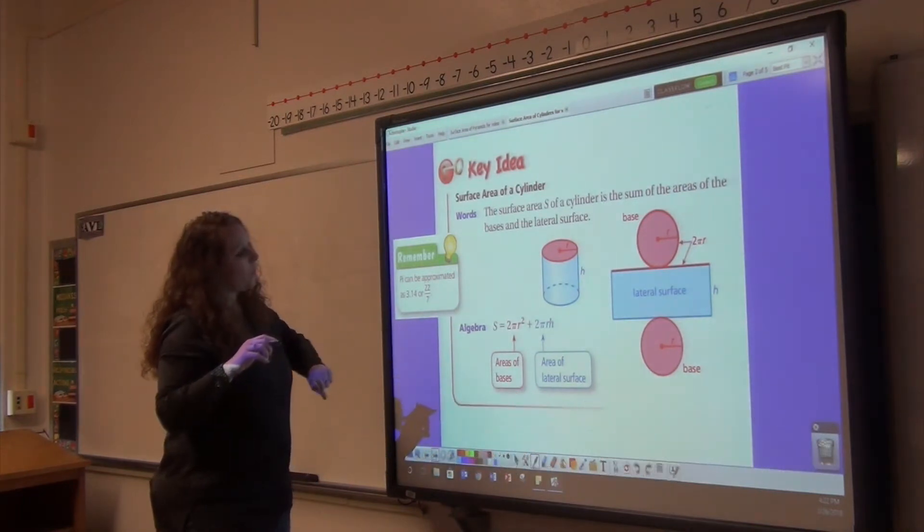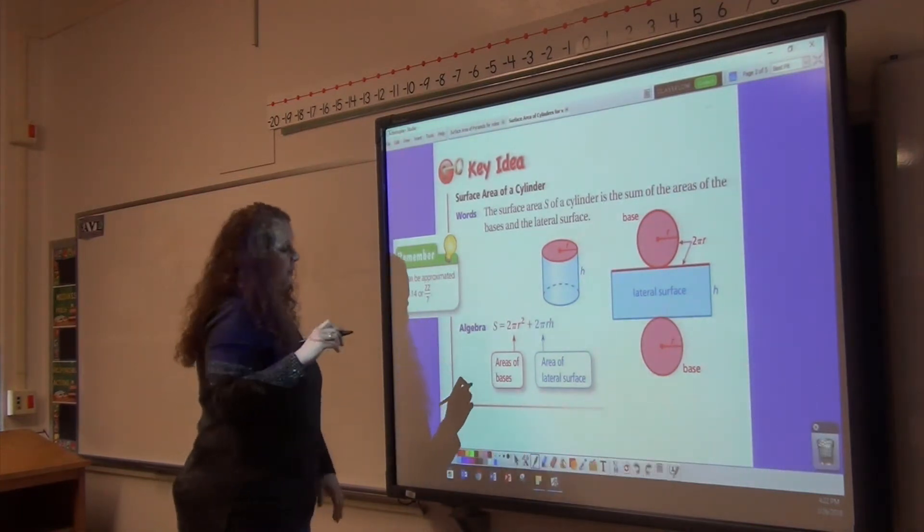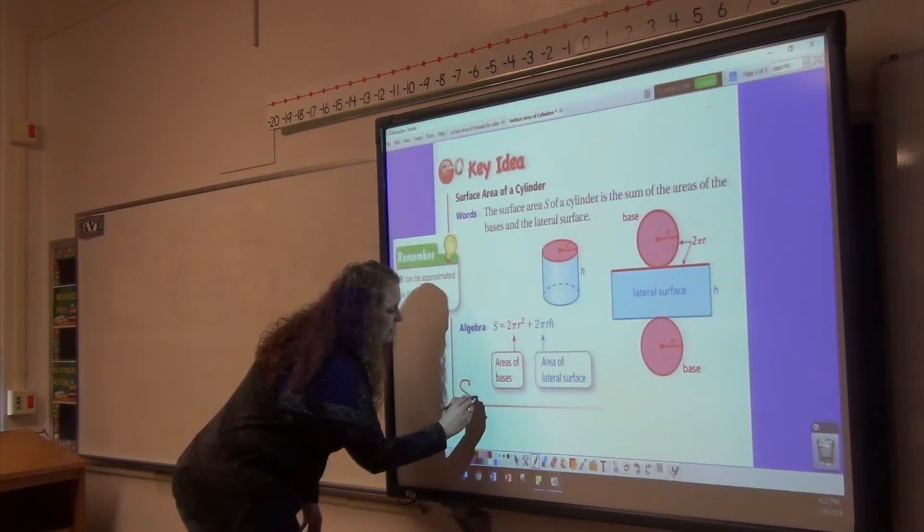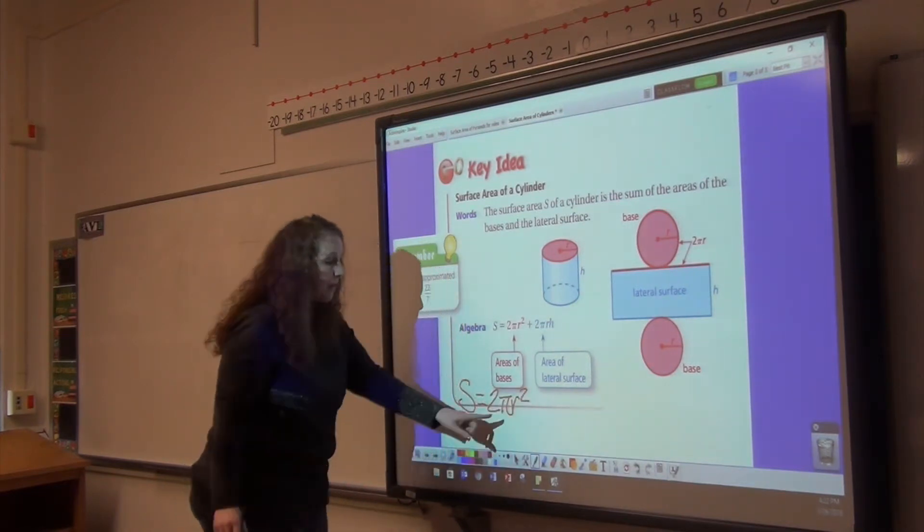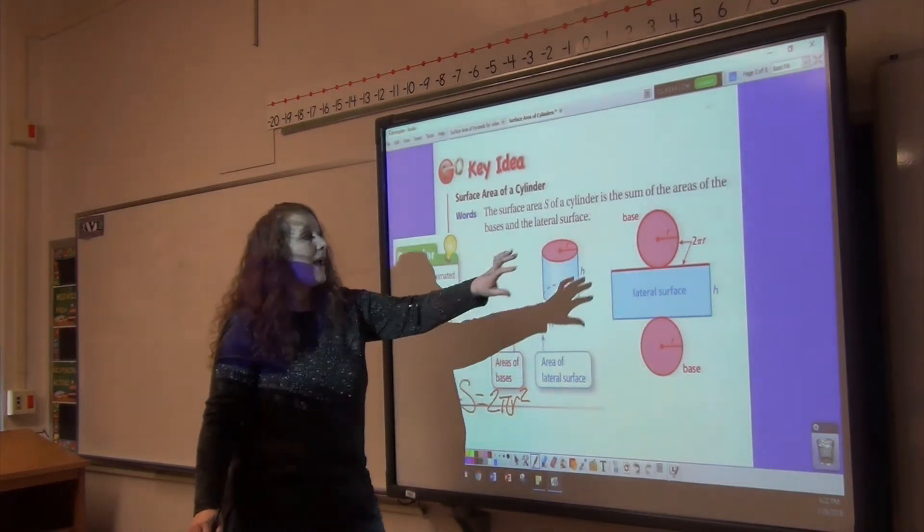All right, what we need to do, I will write this formula for you a little bit larger. Surface area equals 2πr². πr² is the area of the circle. I have two circles,